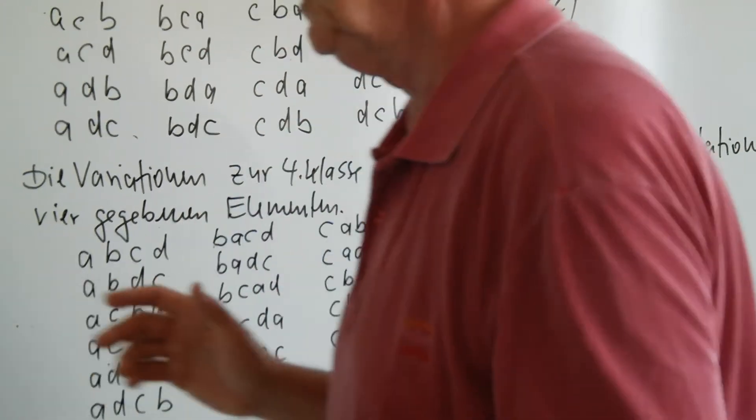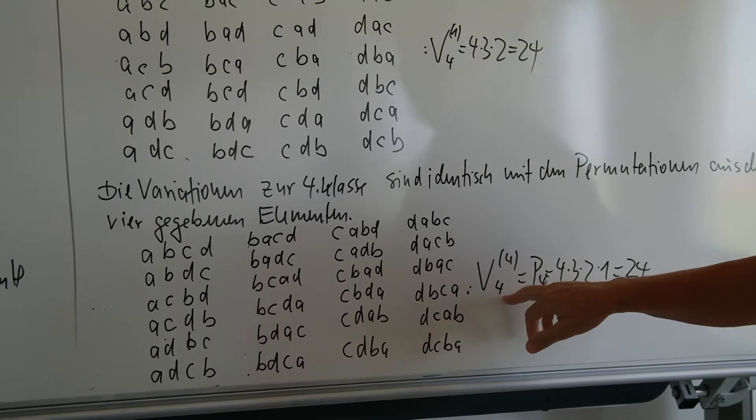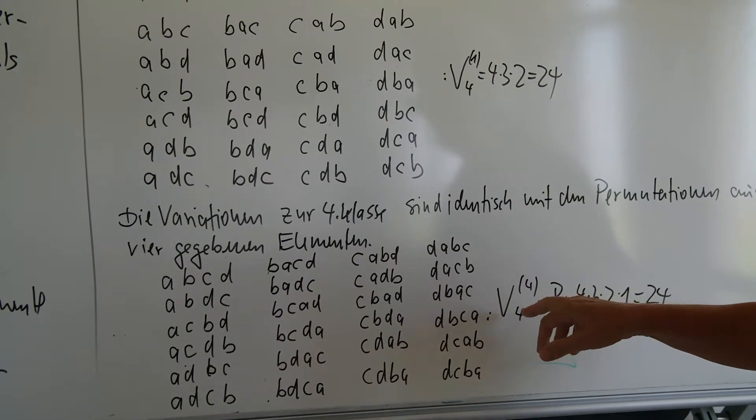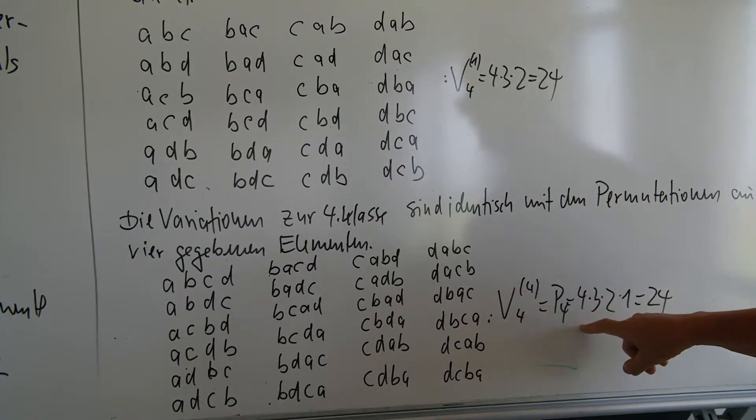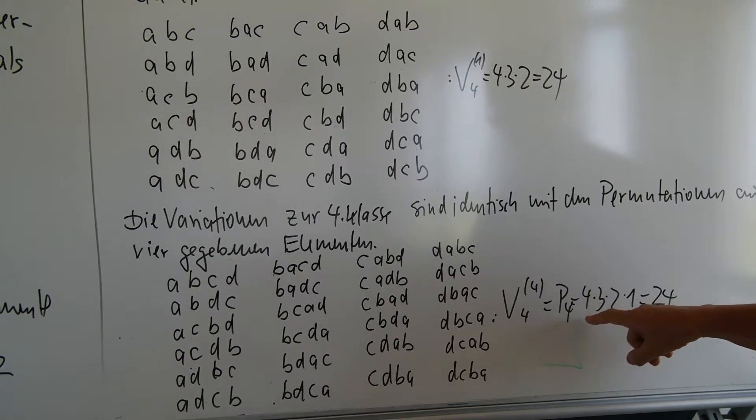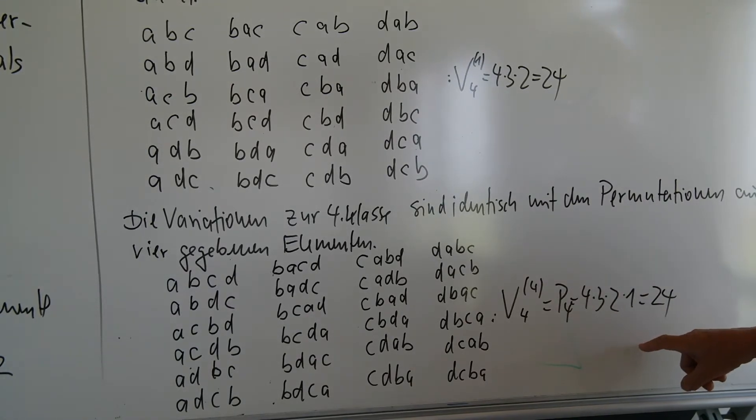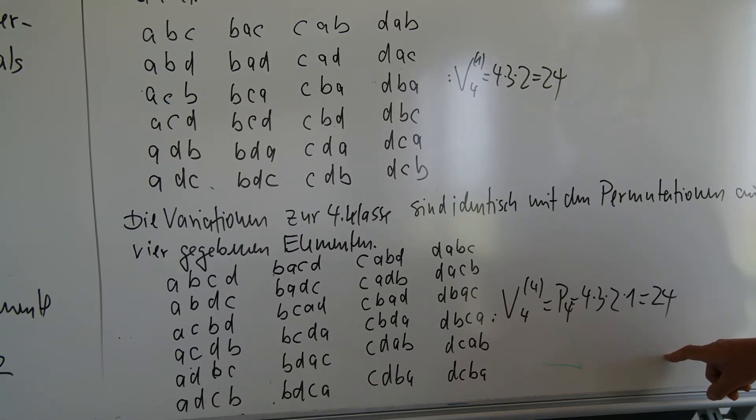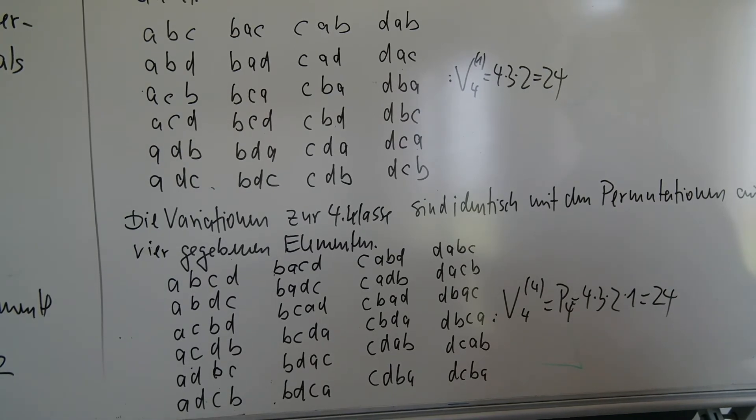Wir betrachten die Variation von N Elementen zur K-ten Klasse und das wäre dann das höchste Element ist N. Dann kommt das nächste Element, das liegt davor, das N minus 1, dann haben wir also N mal N minus 1 mal N minus 2 bis runter zu N minus K plus 1. Und das wäre dann tatsächlich die Variation von N Elementen zur K-ten Klasse.